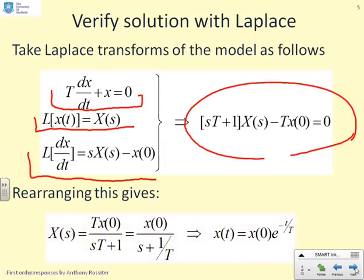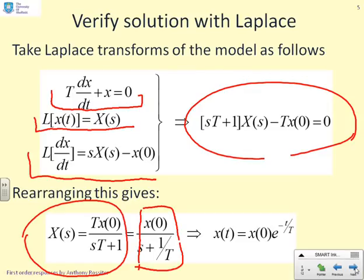If I rearrange this, which I've done at the bottom, you'll end up with X(s) = T x(0) / (sT + 1). I can then rearrange that into the form x(0) / (s + 1/T), which is a standard form from the Laplace table, and therefore the solution follows.